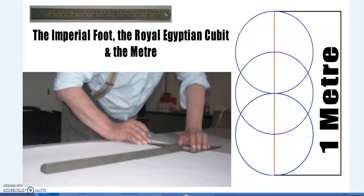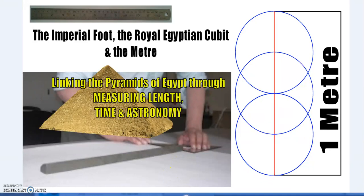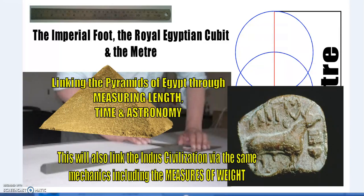The connections between the imperial English foot — which can be found in the Solomon stone, at least 500 BC — the royal Egyptian cubit, and the meter will be linking the pyramids of Egypt through measuring length, time, and astronomy. In previous episodes we went into depth on this, including important mathematical constants. This is not just some arbitrary system; metrology, mathematical, geometric, and astronomical constants all come together.